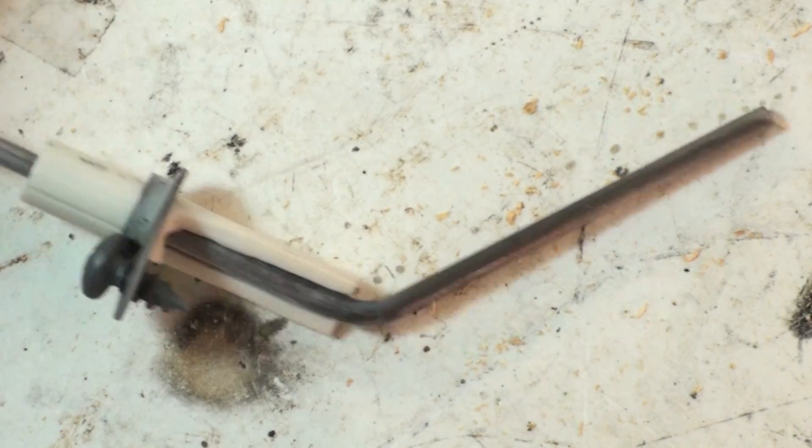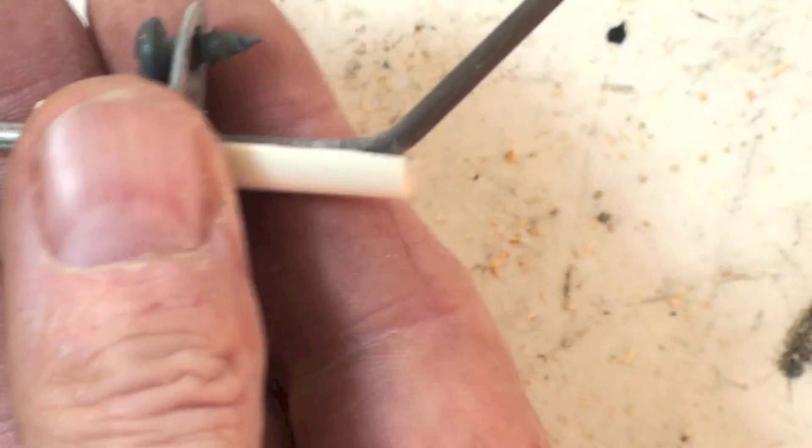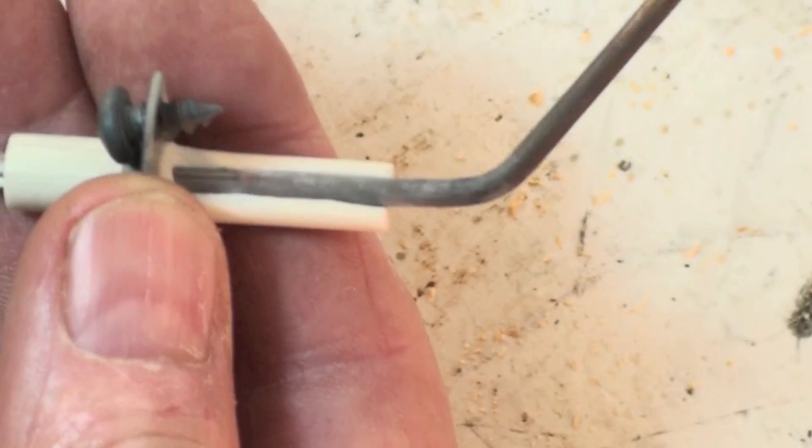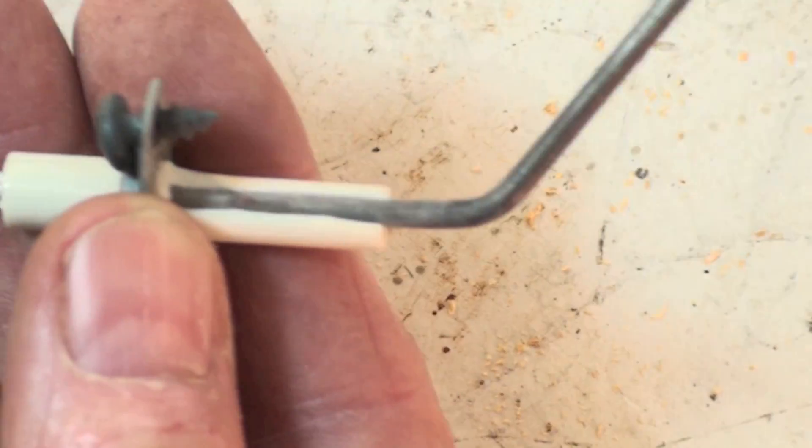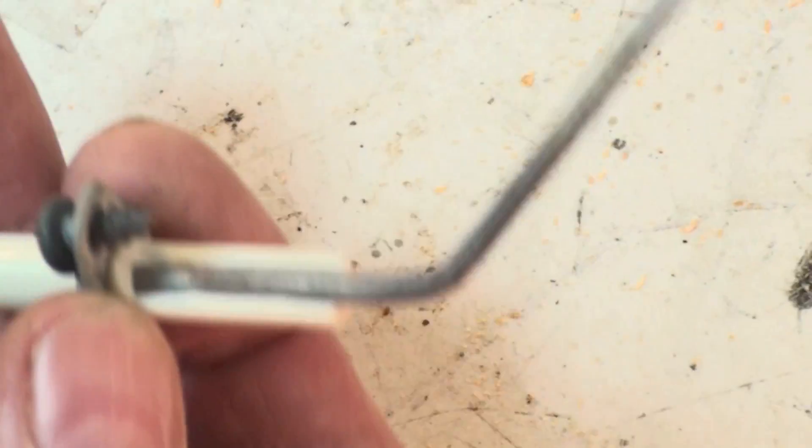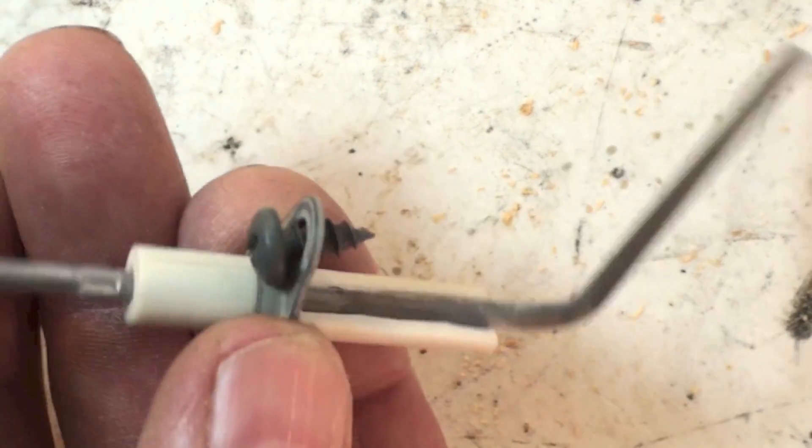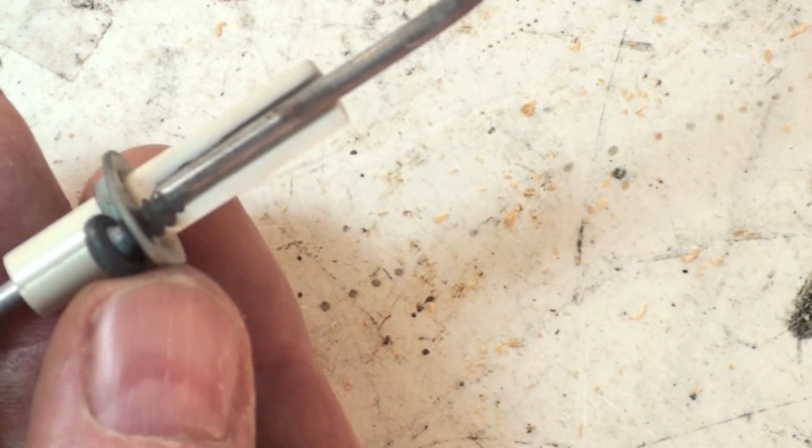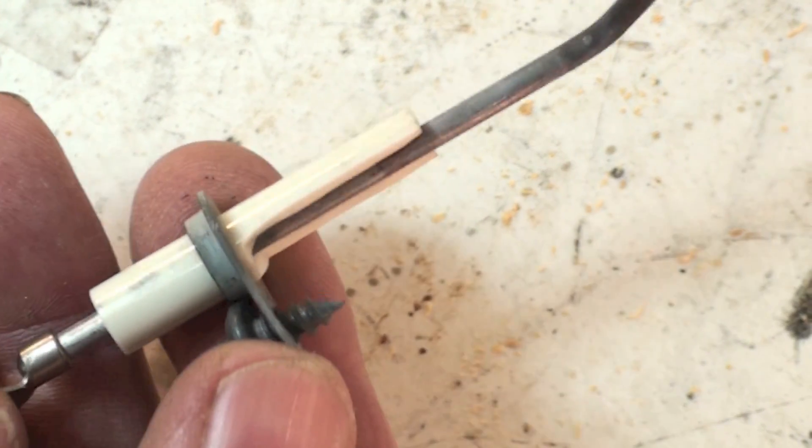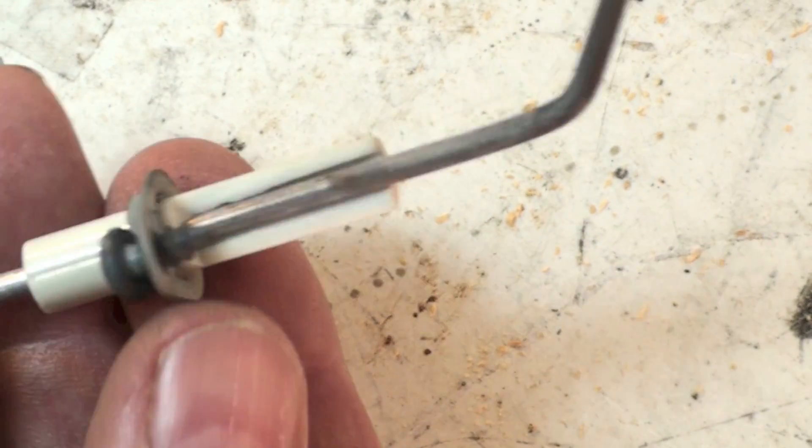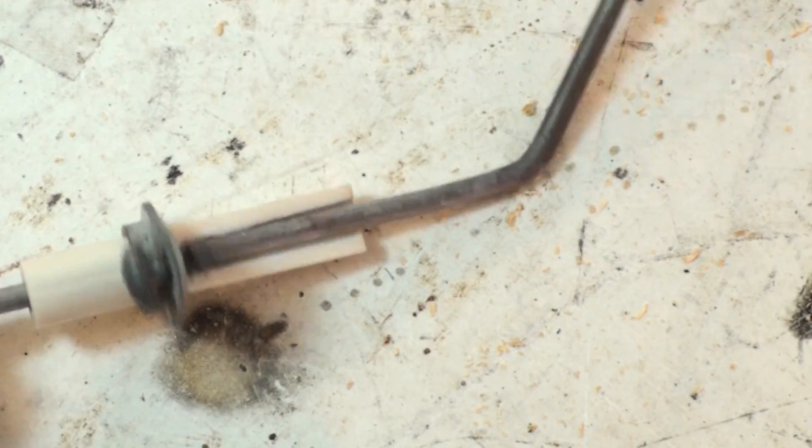Also, flame rods can end up like this where the ceramic is broken. This one actually did work, but it's not going to work long. It just rotates all over the place. So if you have cracked ceramic on these things, certainly you're going to have to replace the flame rod.